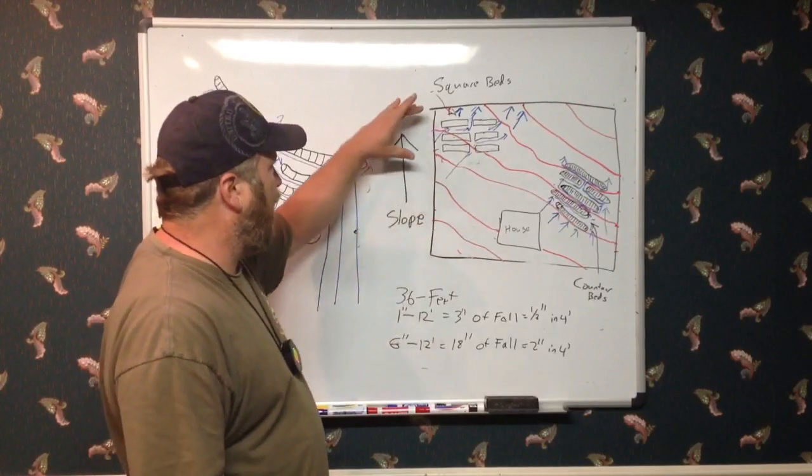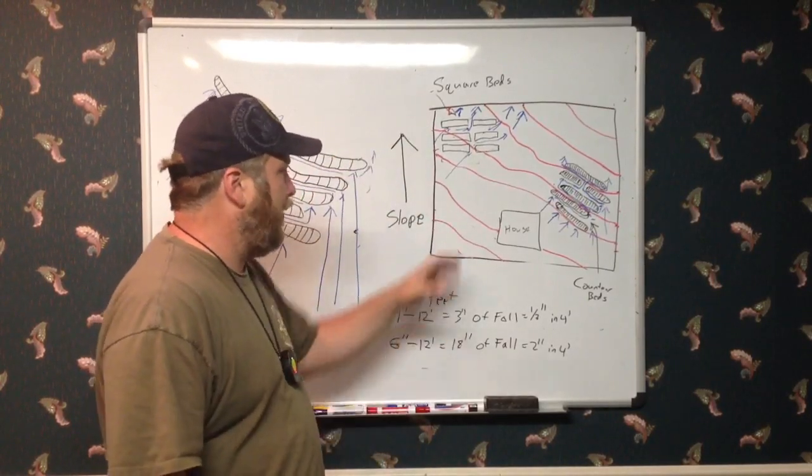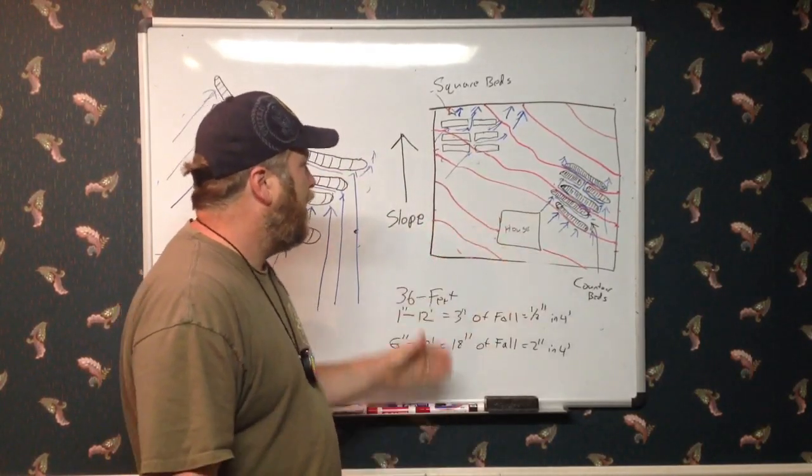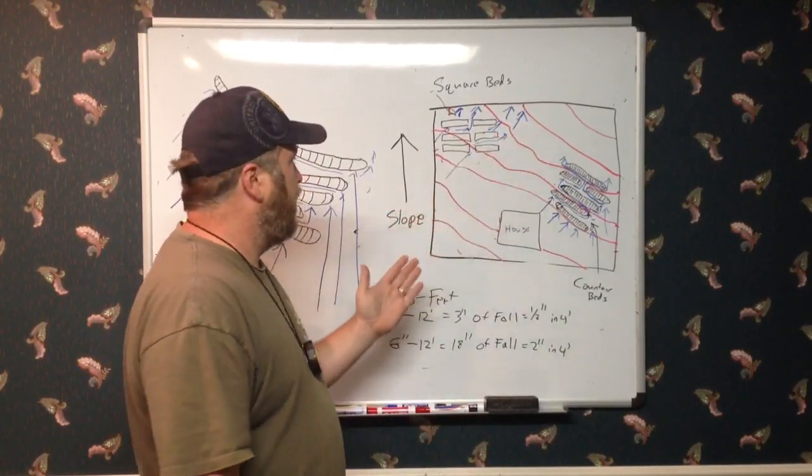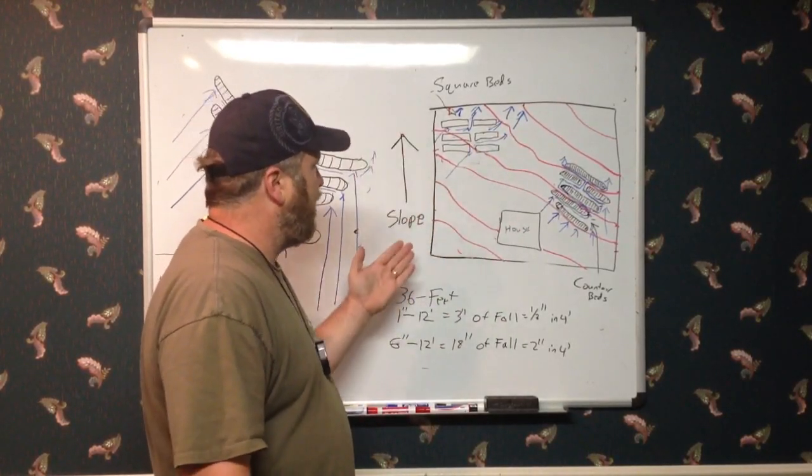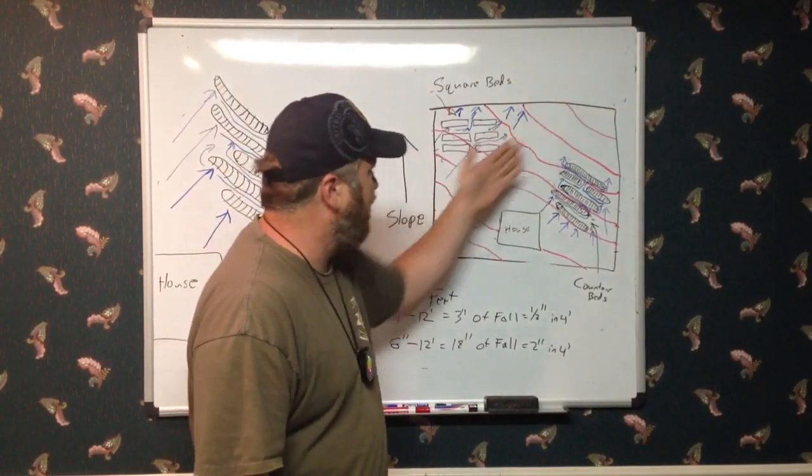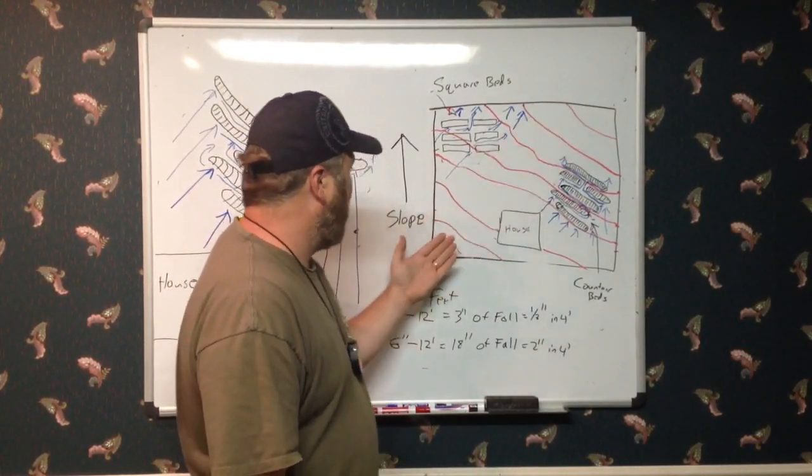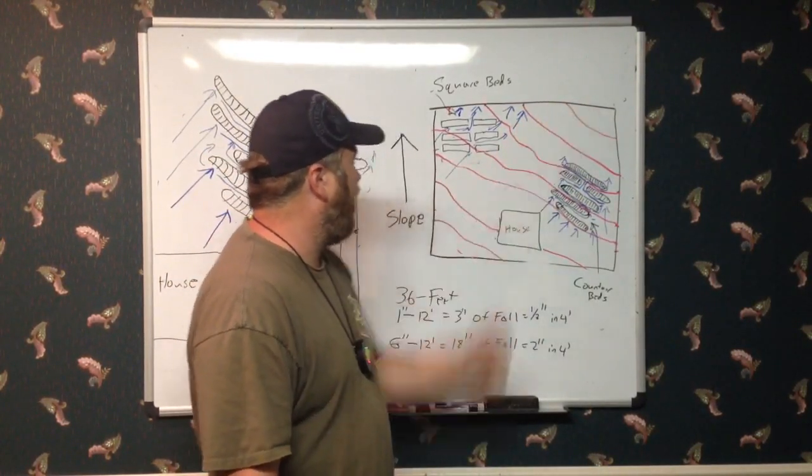Anyway, this is a typical way that a person would build a garden in their backyard. They have their house up here, the street's out here. The red lines, by the way, are contour lines, so the slope is going this way. This is your high point, and this is your low point, falling off to the backyard.